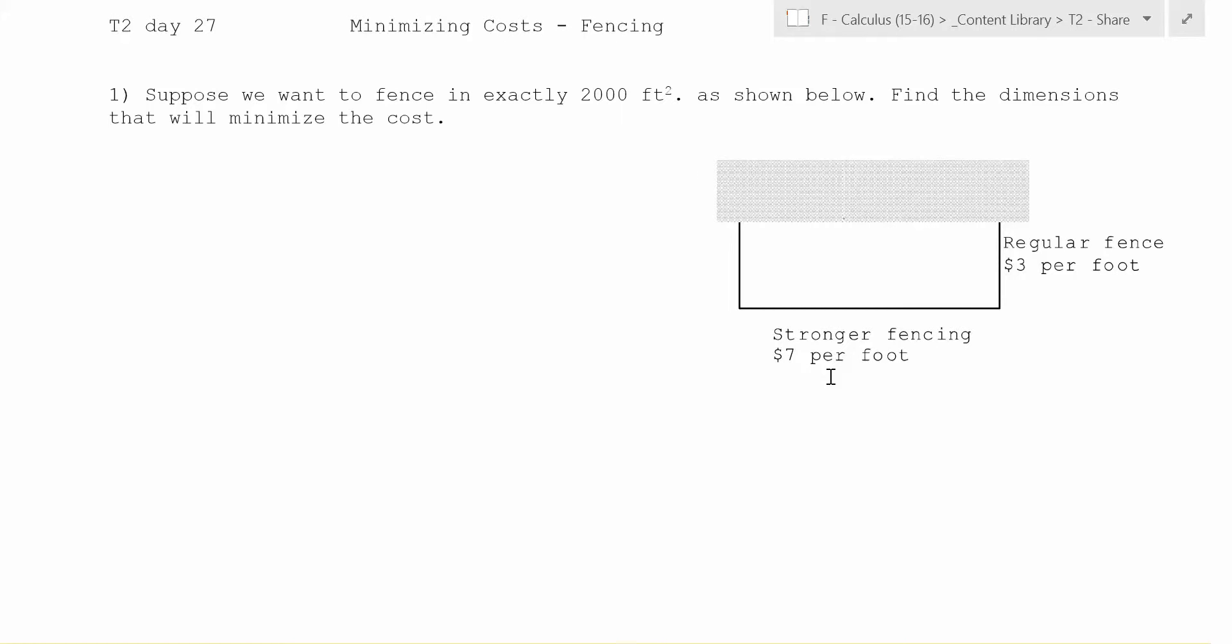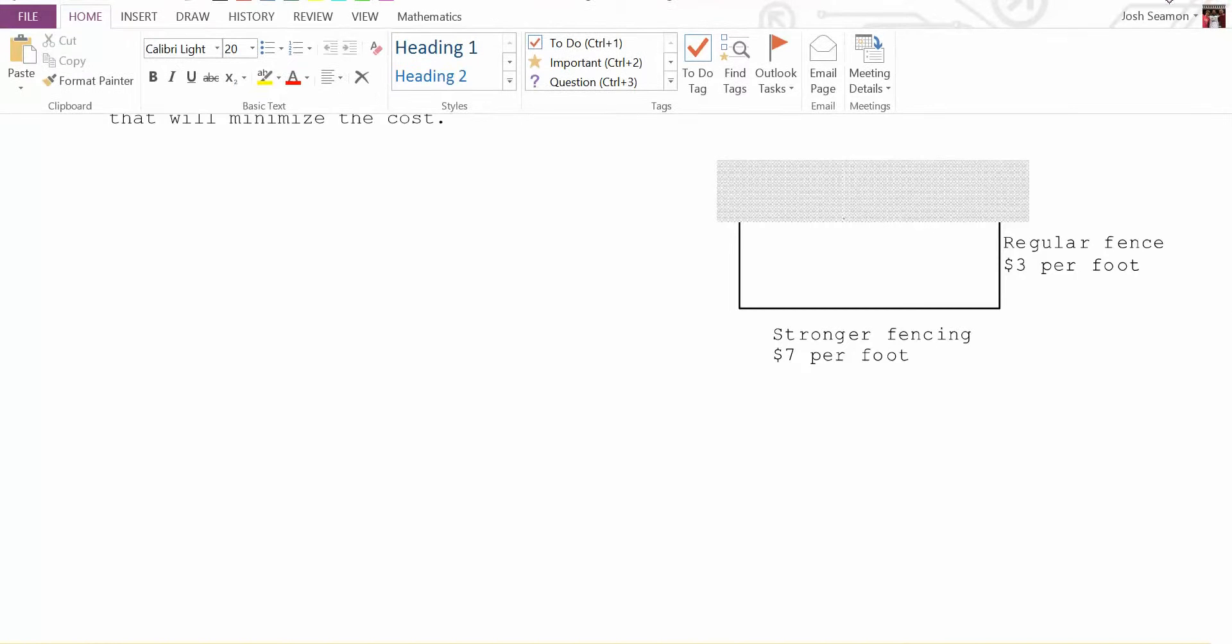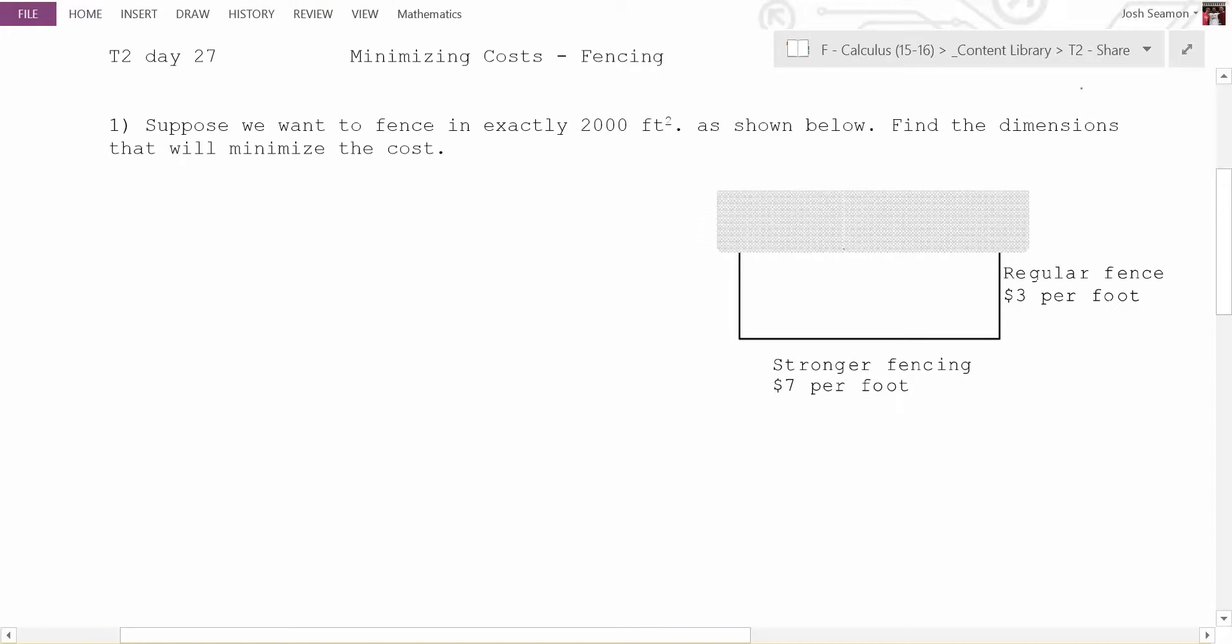How would we go about doing that? Well, to answer this question, we need to find dimensions, right? So how many variables should we be labeling on this? Two. We should be labeling two variables. What two variables should we be labeling, Gabby? So let's call this one length right here, and let's call this one width.